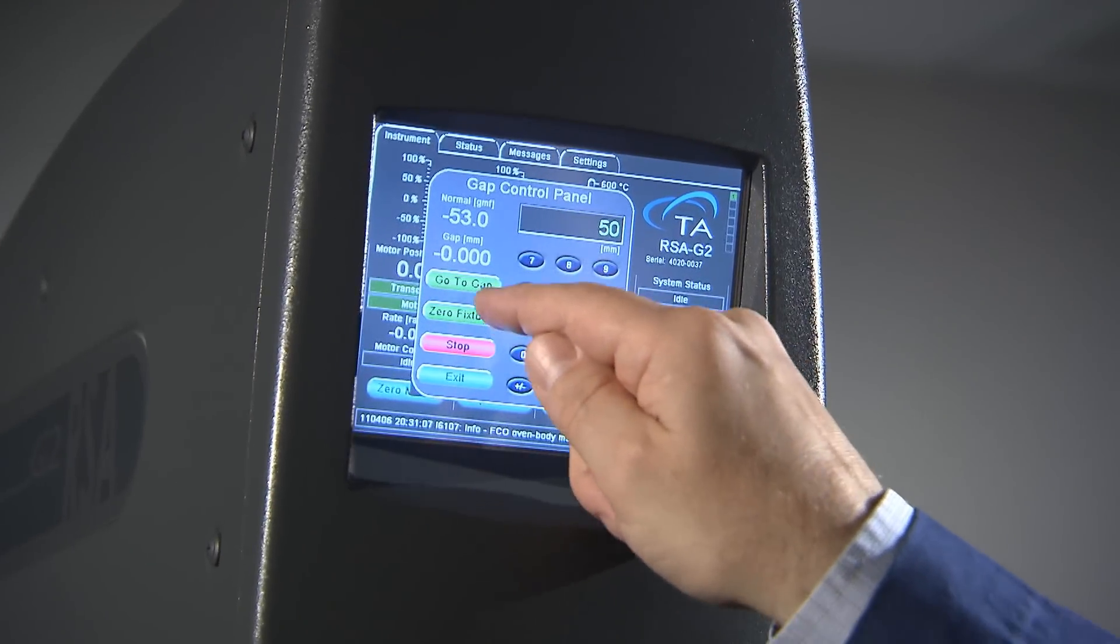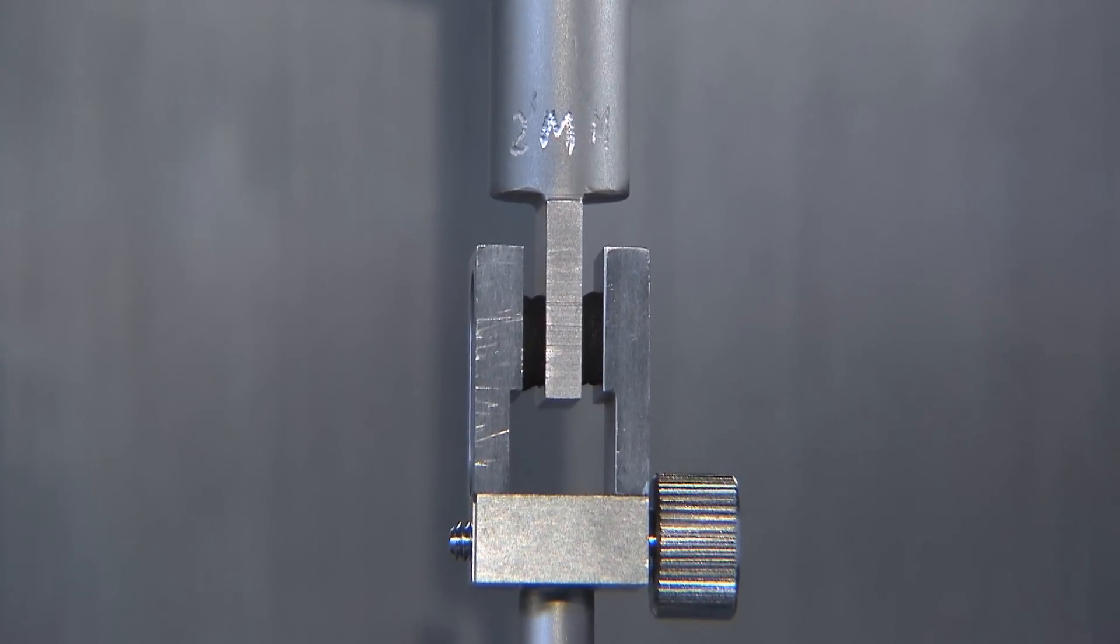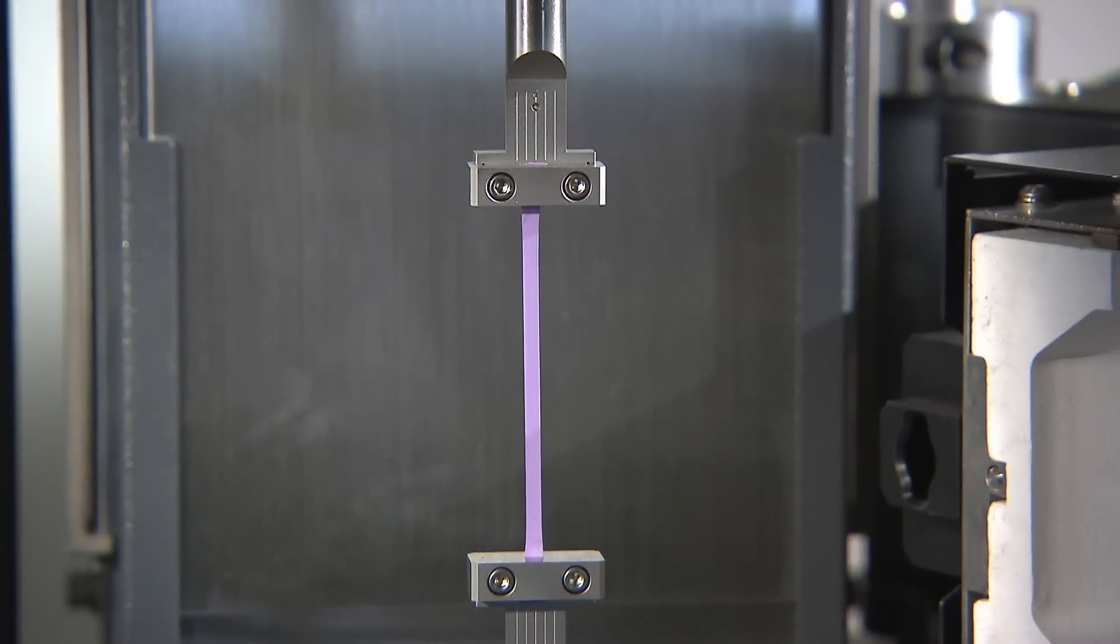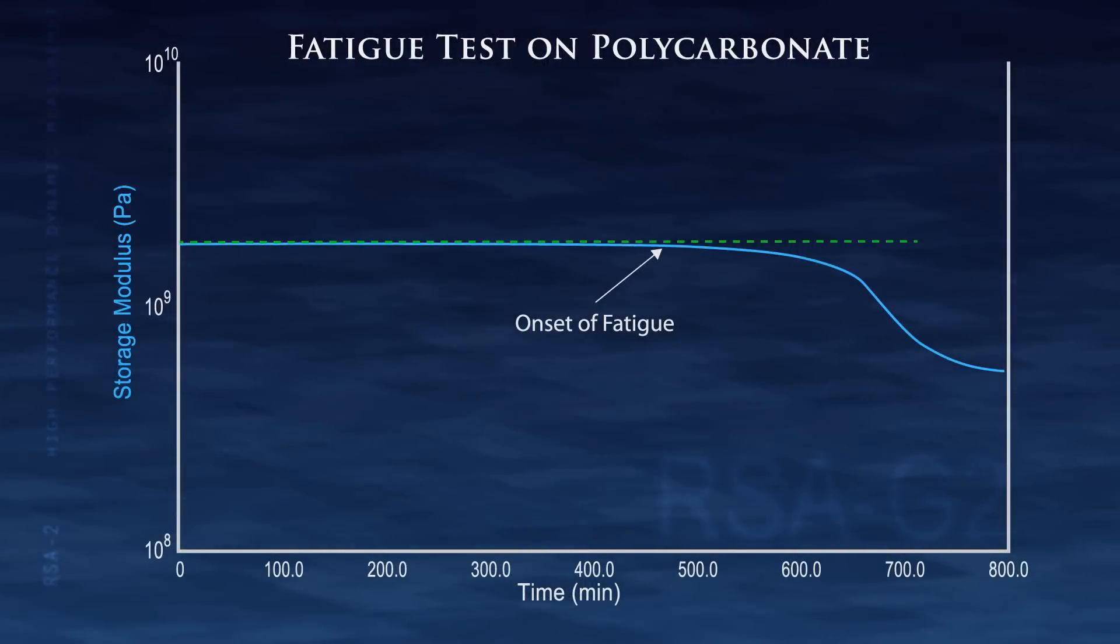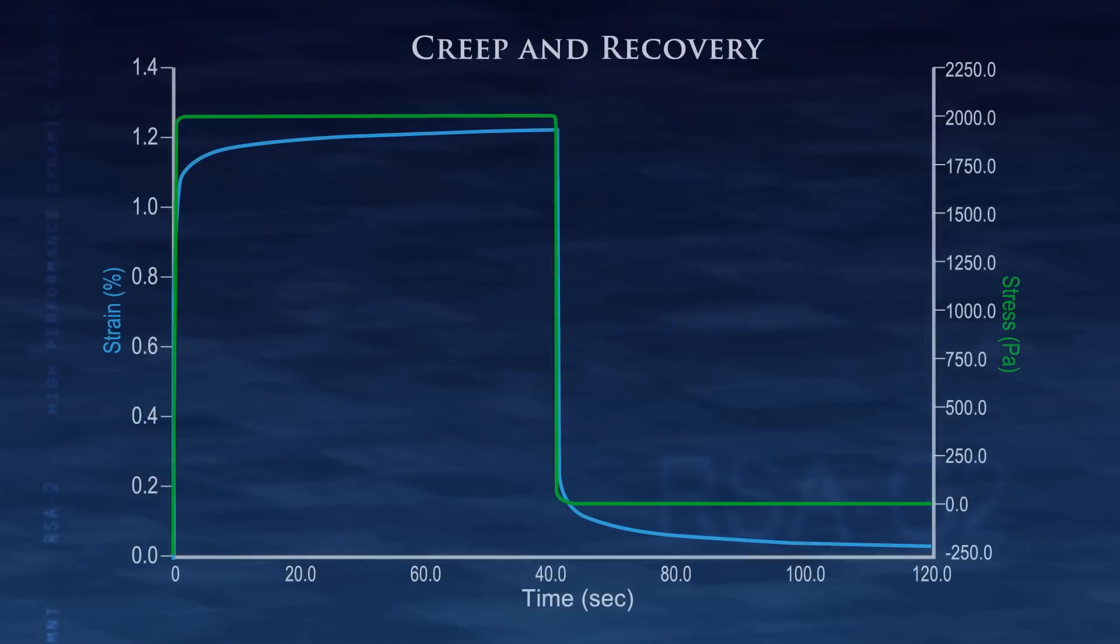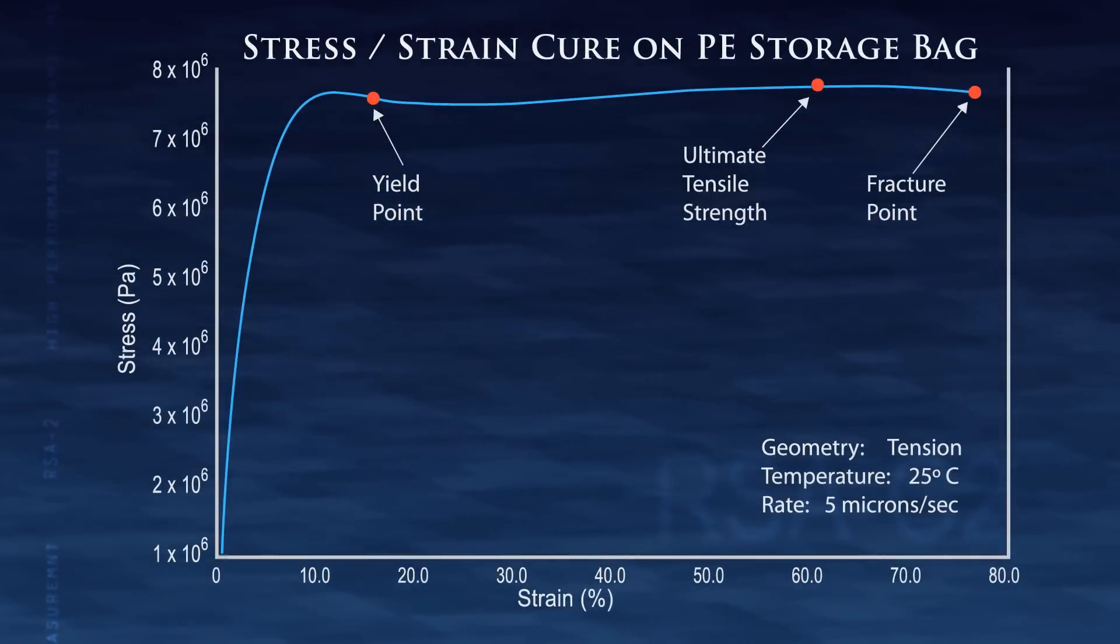Unlike many traditional commercial DMAs, which are limited to dynamic mechanical tests, the RSA-G2 adds versatility by extending testing capabilities to include strain and stress-controlled fatigue, stress relaxation, creep and recovery, isostrain and isostress, and axial rate control with linear and hanky rates.